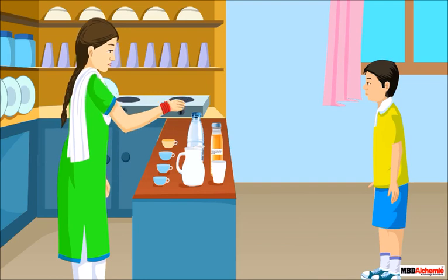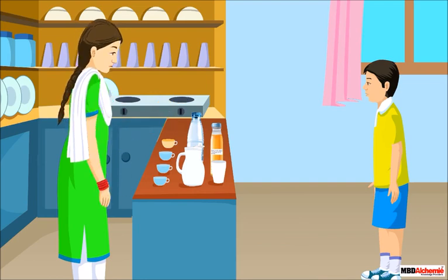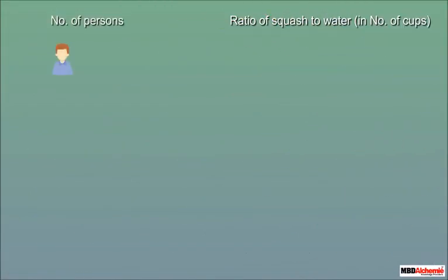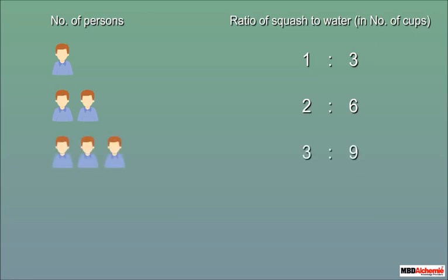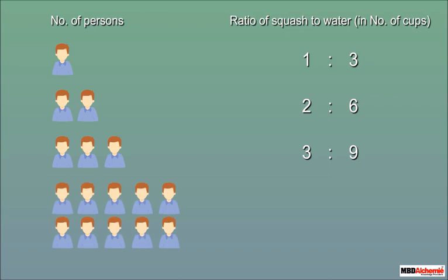Using ratio it is easy to calculate. The ratio of squash to water for one person is one is to three. For two persons, multiply the ratio by two — it becomes two is to six. For three persons, multiply by three — that is three is to nine. For ten persons, take ten cups of squash and thirty cups of water, found by multiplying the ratio by ten.